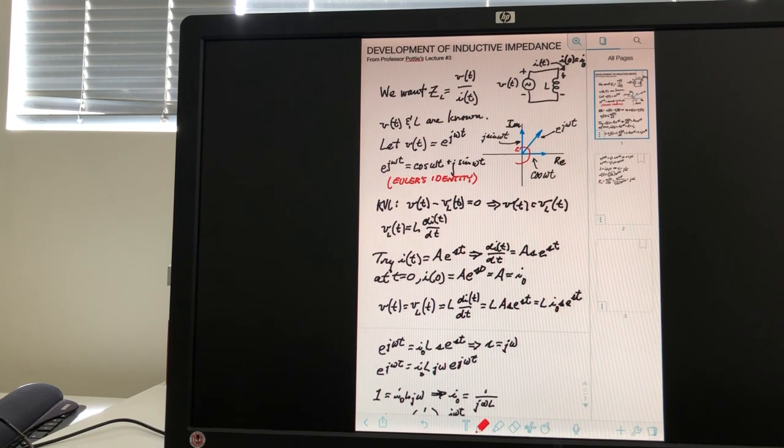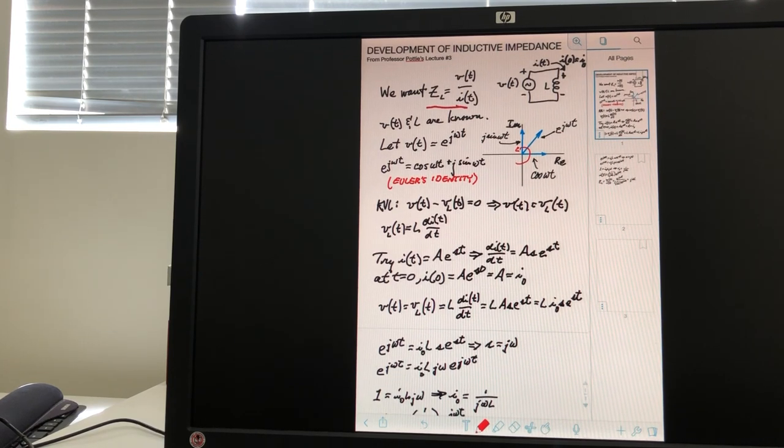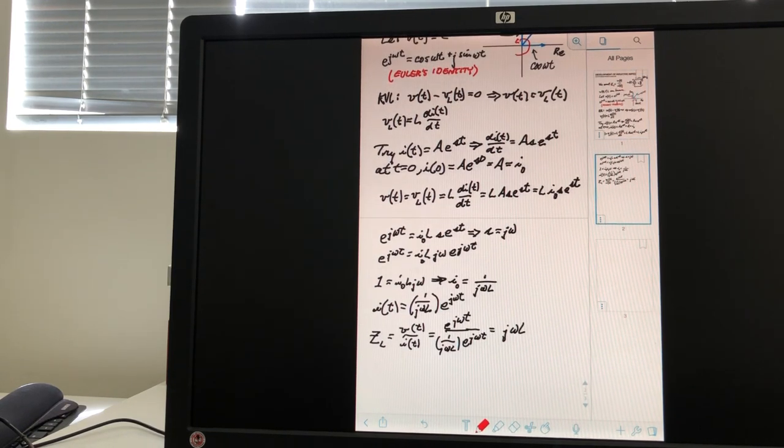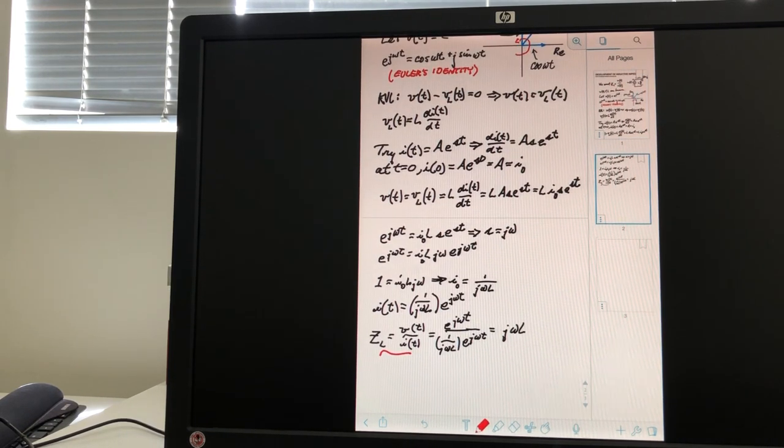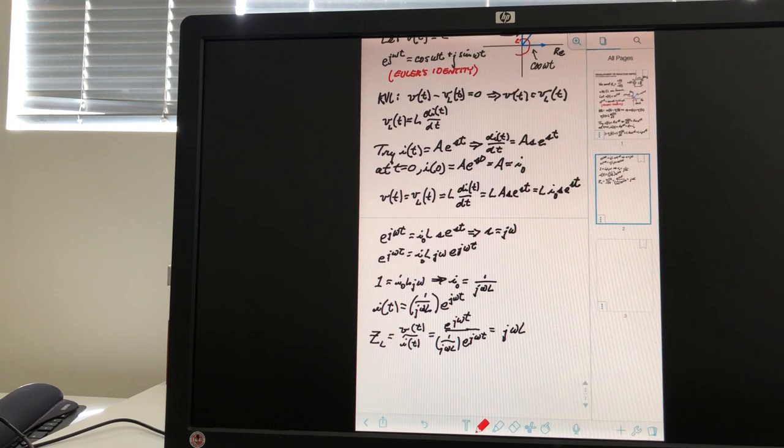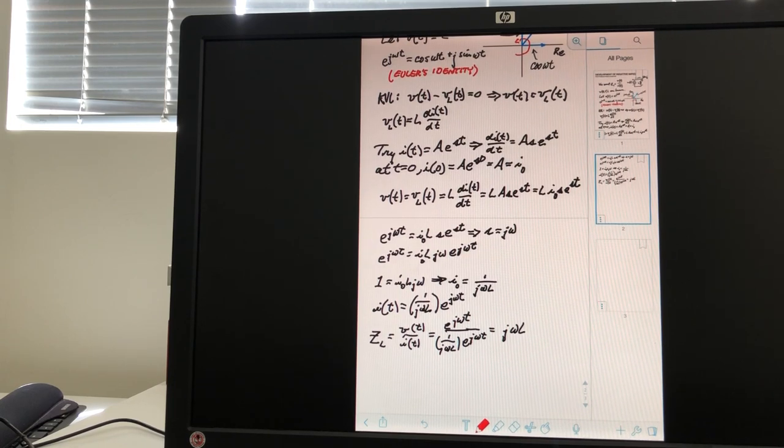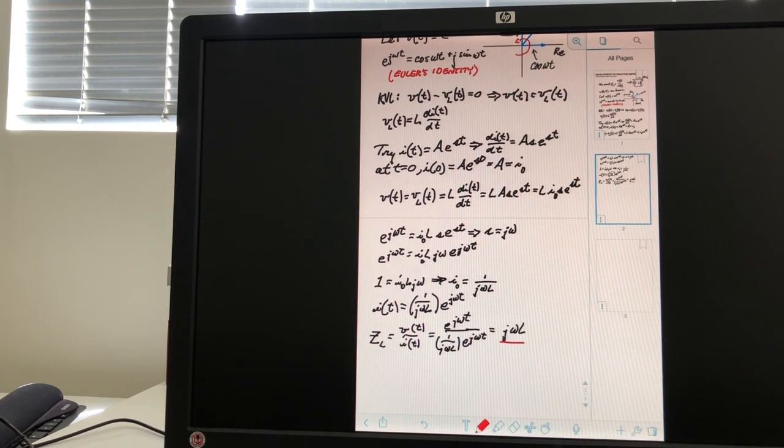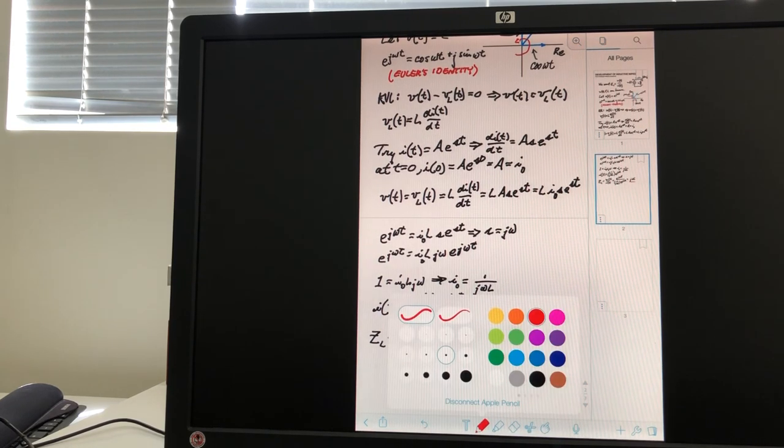And remembering that we want the expression for ZL. We want the expression for an Ohm's law type of expression. And it would be some V over I. So, that's what we're after. And so, this is it. ZL is equal to V over I. We know that V is e to the j omega t. And I of T is this expression right here. So, obviously we can cancel out the e to the j omega Ts. And we're left with ZL equals j omega L, which is now our answer. This is the inductive impedance.